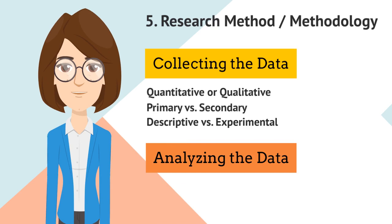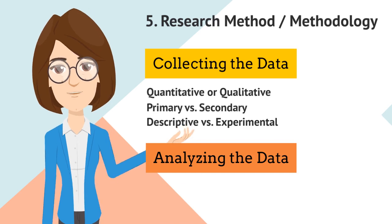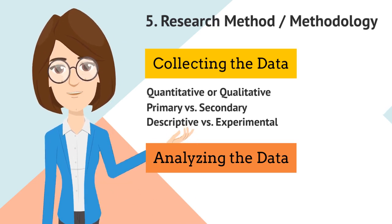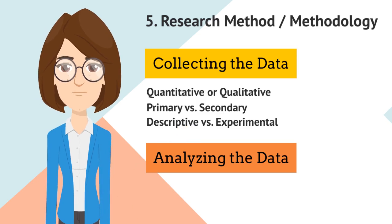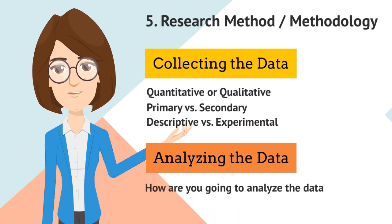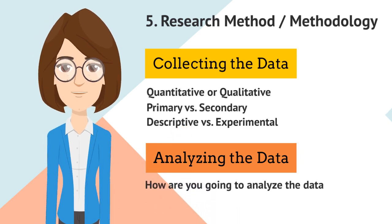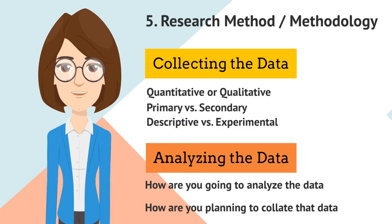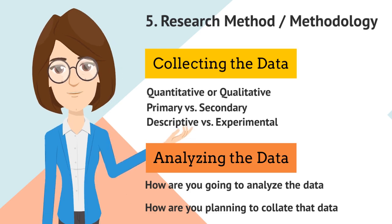You need to state where you have chosen each approach and justify the choices you made. This area of your research proposal is the most important in determining the success of your project, as it is the most weighted section. For analyzing the data: How are you going to analyze it? For quantitative data, you can use statistical analysis methods to test relationships between variables. For qualitative data, you can use methods such as thematic analysis to interpret patterns and meanings in the data.